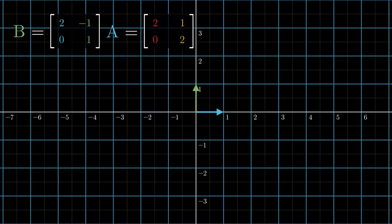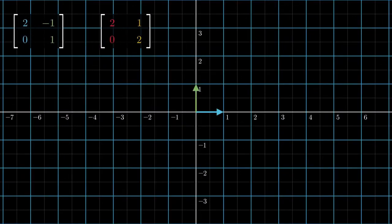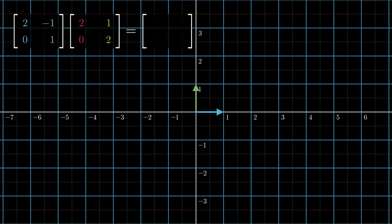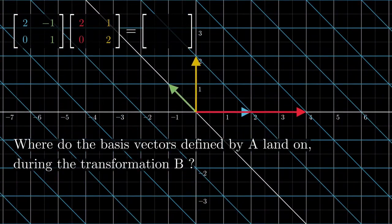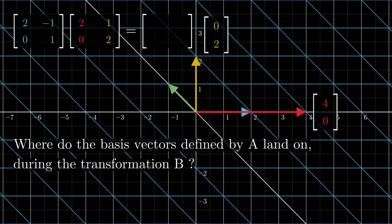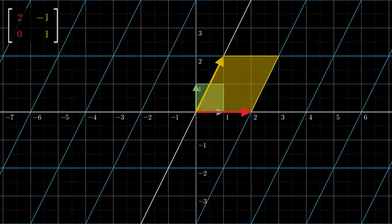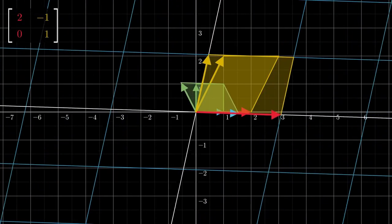Multiplying matrix B to matrix A is just equivalent to asking the question: where do the basis vectors defined by matrix A land on during transformation B? In this case, the ultimate landing spots for our basis vectors happen to be (4, 0) and (0, 2) respectively.